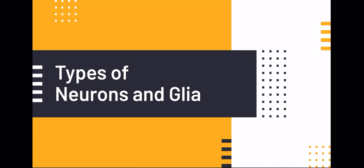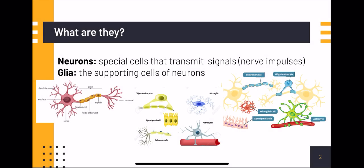Neurons and glia. Neurons are special cells that transmit signals, essentially nerve impulses. Glia are the supporting cells of neurons.